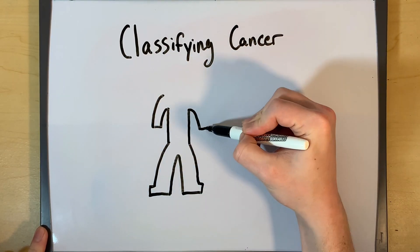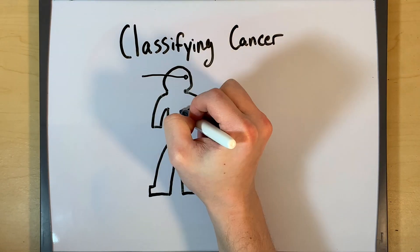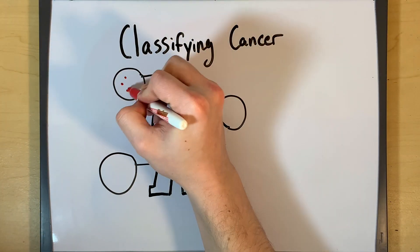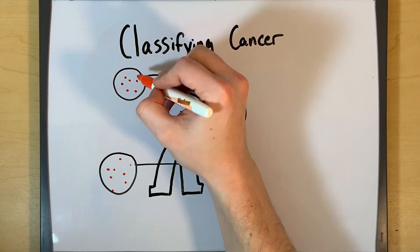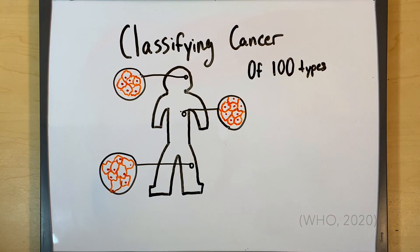Cancers are generally classified by which area of the body they are observed in. Of the over 100 recognized types of cancer that affect humans, the most prevalent type is that of breast cancer.